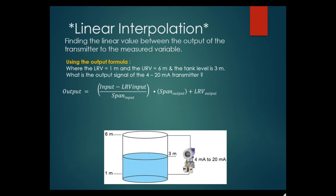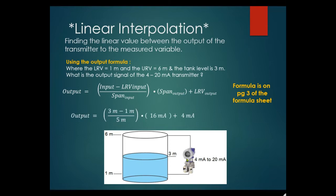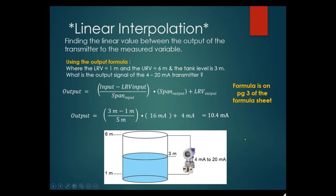The formula is on page 3 of your formula sheet. Working through the example: input is 3 meters minus LRV of 1 meter, divided by span of 5 meters, times output span of 16 milliamps, plus LRV of 4 milliamps — giving 10.4 milliamps. These calculations should become standard for you. You can also go vice versa using the input formula, which is just a transposition.